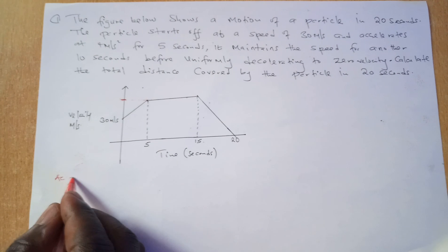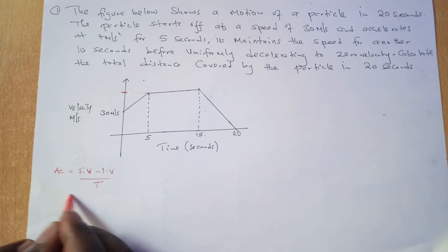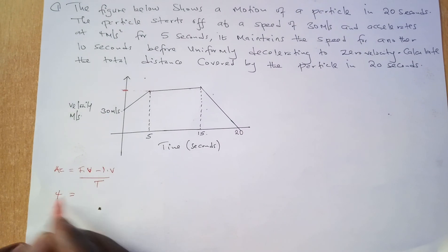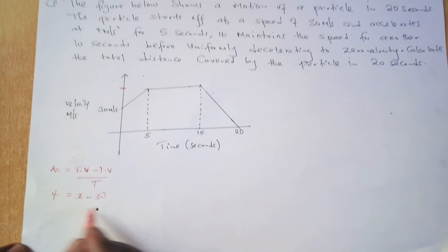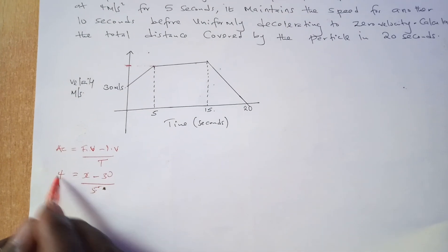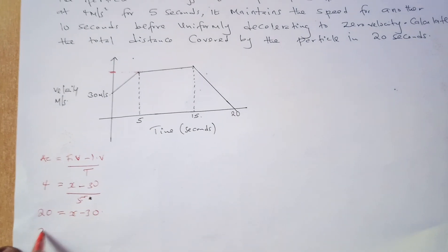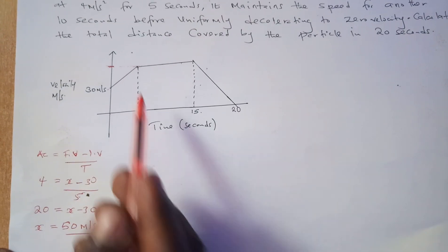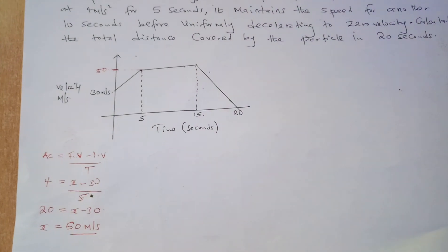We know that acceleration equals final velocity minus initial velocity, divided by time. Acceleration is 4, initial velocity is 30, and time for this segment is 5 seconds. Cross-multiplying gives 20 equals x minus 30, so x equals 50. The maximum velocity at that point is 50 meters per second.